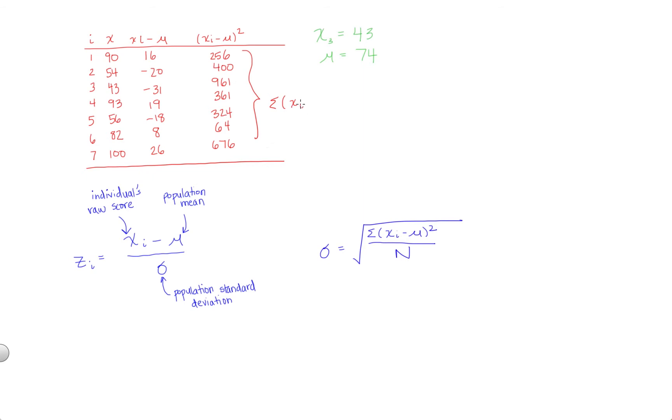That's how we get our numerator, called the sums of squares. If you add up these values, you end up with 3042.